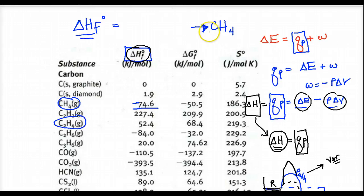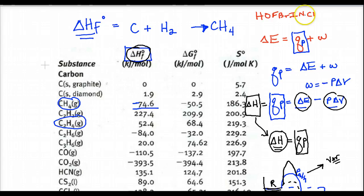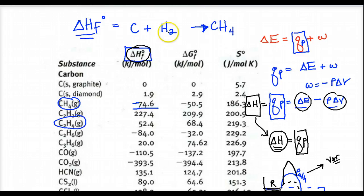What's the elemental state of the components of methane? You have carbon and hydrogen. But because hydrogen is diatomic naturally in its elemental state, you have to write H2. It's very important to recognize your diatomic elements — the Hofbrinkels: H2, O2, F2, Br2, I2, N2, Cl2. When I say hydrogen or oxygen or fluorine or bromine, iodine, nitrogen, or chlorine, their elemental state is their diatomic state, so I have to write H2. Then of course I balance.